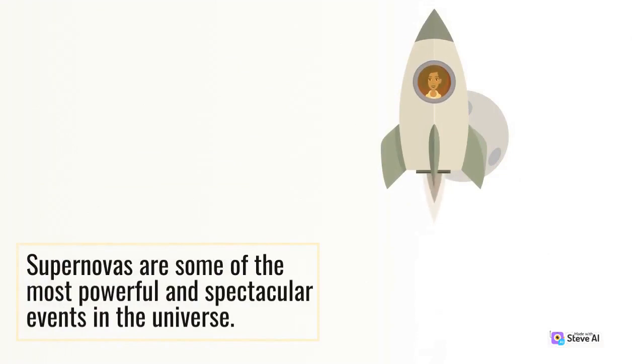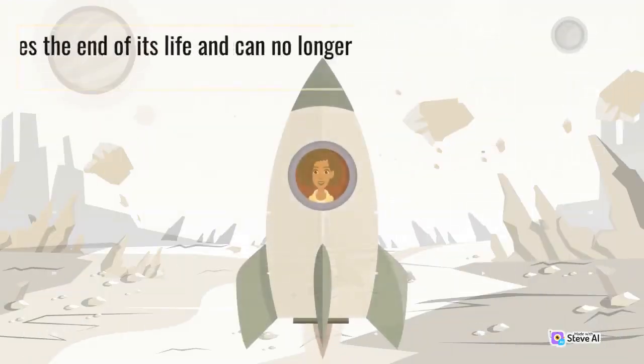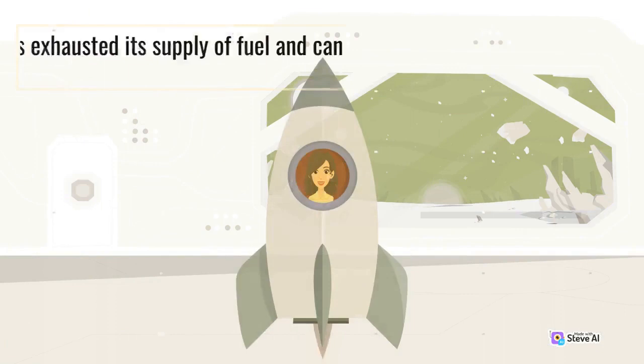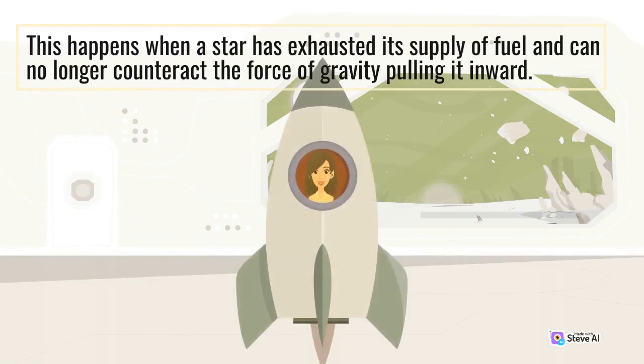Supernovas are some of the most powerful and spectacular events in the universe. They occur when a star reaches the end of its life and can no longer produce energy through nuclear fusion. This happens when a star has exhausted its supply of fuel and can no longer counteract the force of gravity pulling it inward.